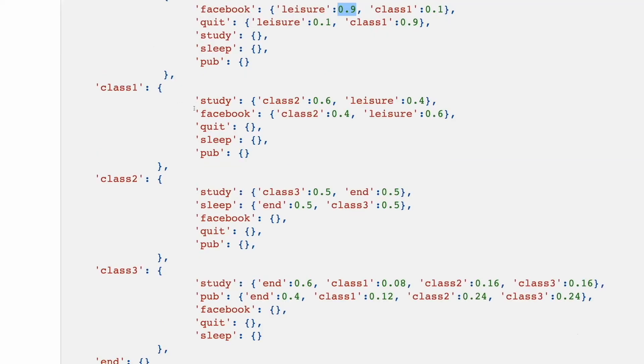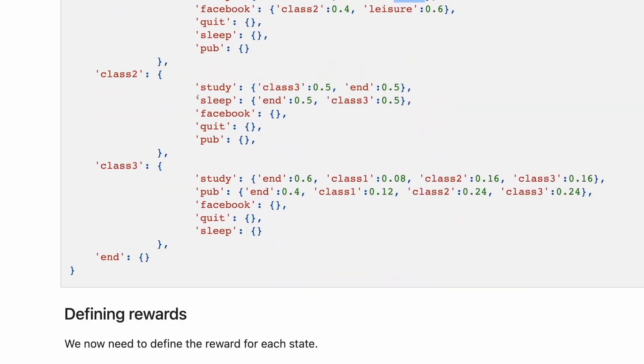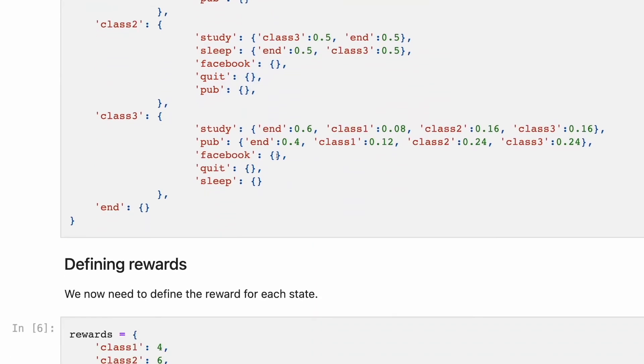Then for the class 1, going study from class 1 to class 2 is 60% probability, going to leisure from class 1 is 40% probability. And the same for rest. Not all actions available for each state. The actions that are unavailable for the state simply has no transition probability. So it is impossible to perform this action in this state.